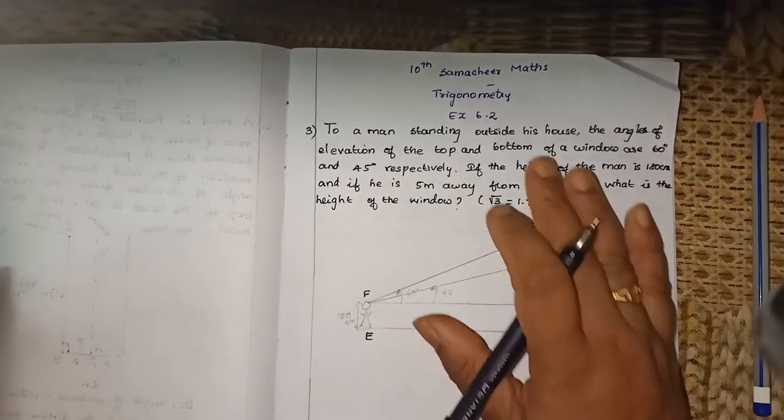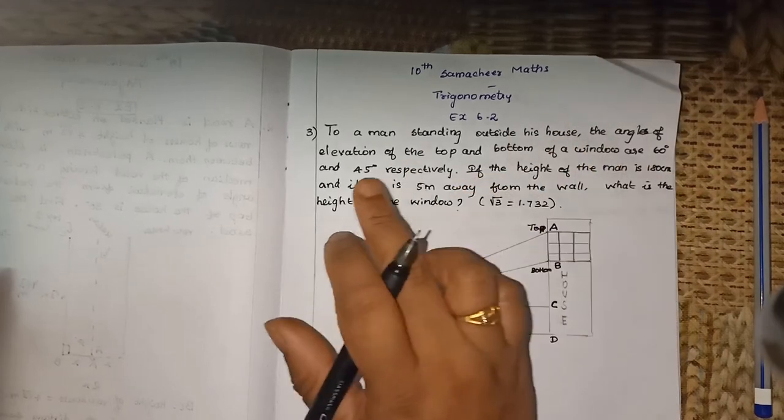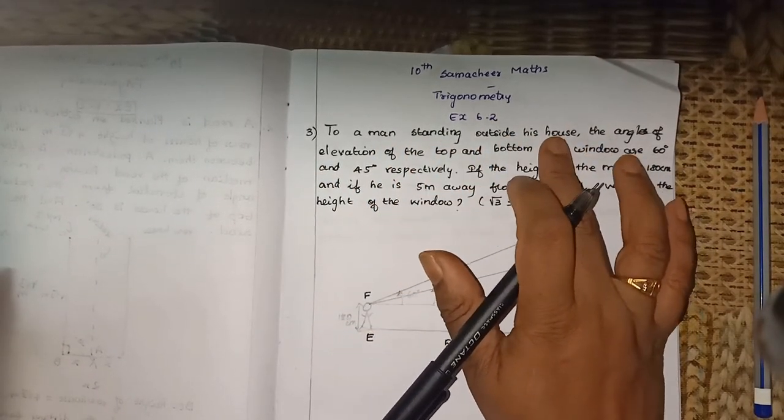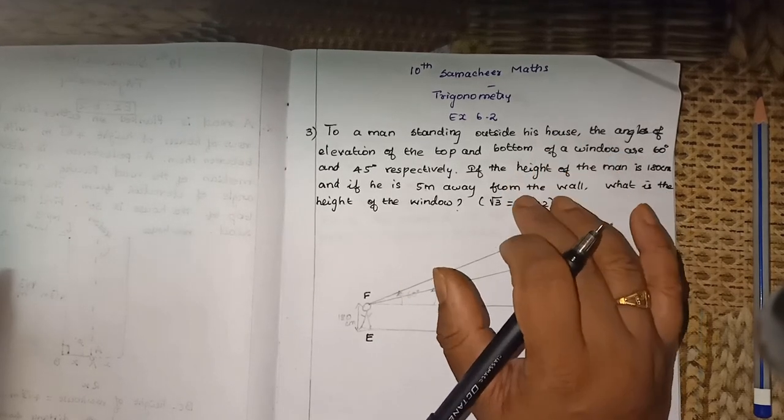So today we are going to see 10th Samacheer Maths trigonometry Exercise 6.2. Third sum: to a man standing outside his house. In trigonometry problems you need patience to read the question.